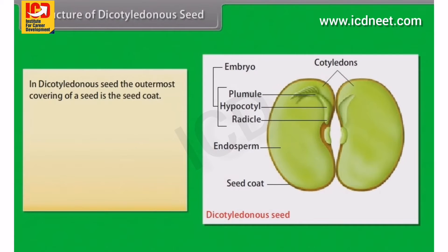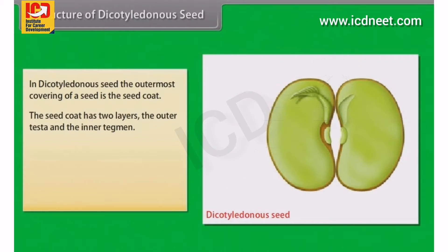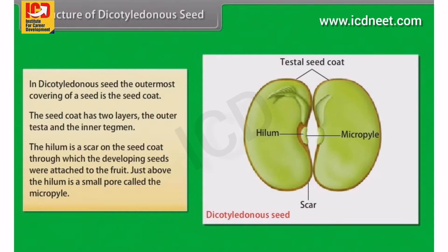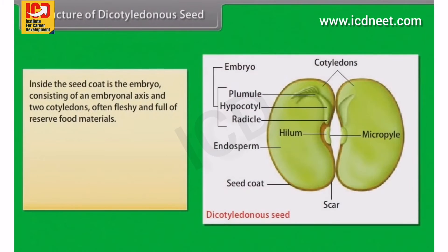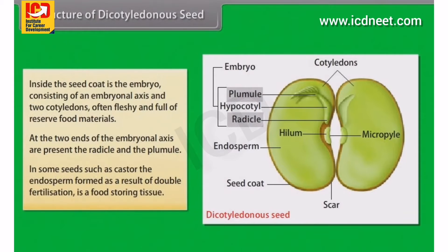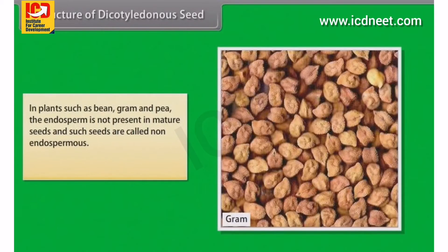In a dicotyledonous seed, the outermost covering is the seed coat, which has two layers: the outer testa and the inner tegmen. The hilum is a scar on the seed coat through which the developing seeds were attached to the fruit. Just above the hilum is a small pore called the micropyle. Inside the seed coat is the embryo, consisting of an embryonal axis and two cotyledons, often fleshy and full of reserved food materials. At the two ends of the embryonal axis are the radicle and the plumule. In some seeds such as castor, the endosperm formed as a result of double fertilization is a food storing tissue. In plants such as bean, gram and pea, the endosperm is not present in mature seeds, and such seeds are called non-endospermous.